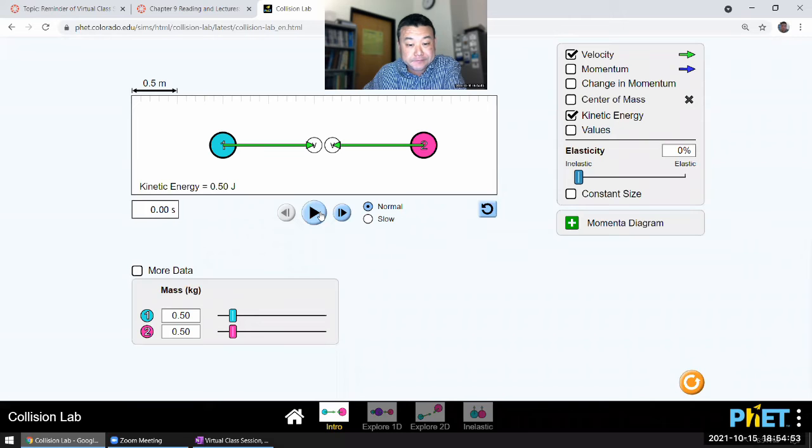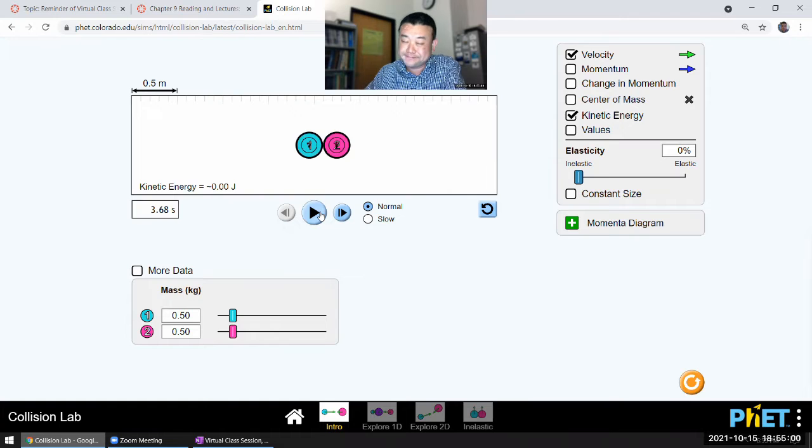After they collide, they come to a complete stop and kinetic energy is equal to zero. So that's the constraint that remains for completely inelastic collision.